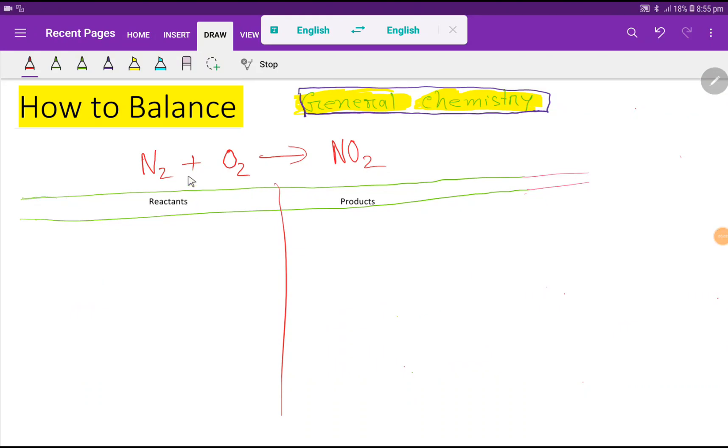Welcome to this class. Today we are going to balance this reaction. This is nitrogen, this is oxygen, and this is nitrogen dioxide. To balance this reaction we have to draw a table like this. This is reactant side and this is product side.